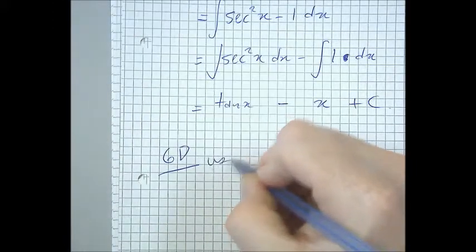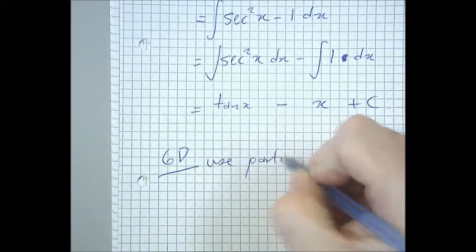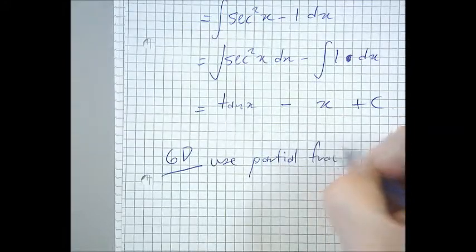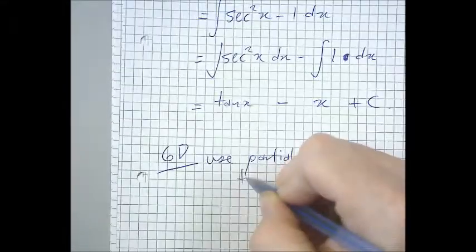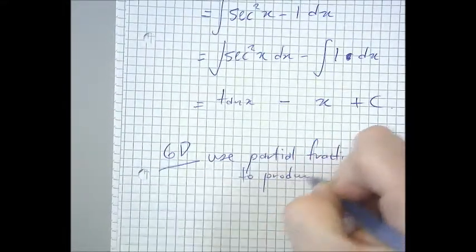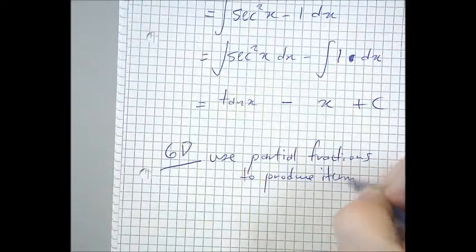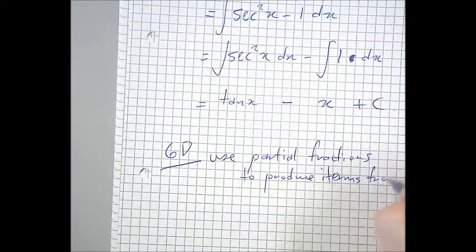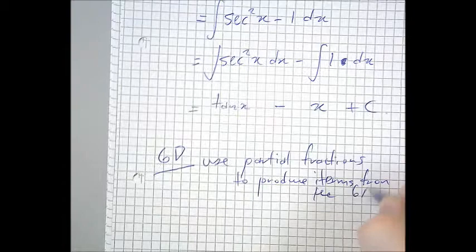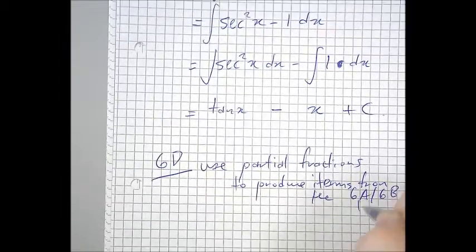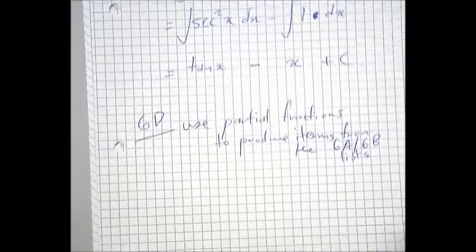6D is like 6C. This says use partial fractions to produce items from the 6A, 6B lists. Okay, so this is straight revision from the first chapter of Core 4.